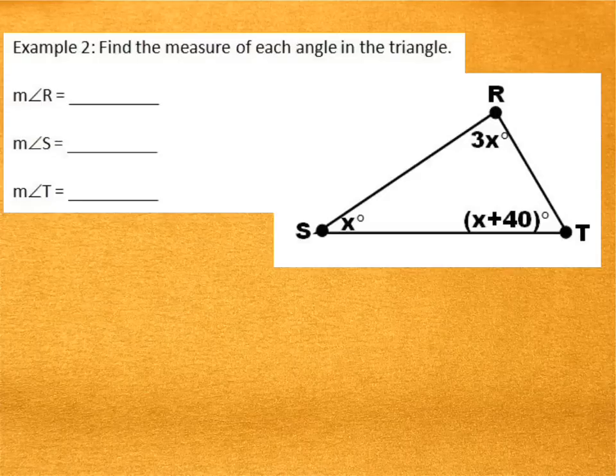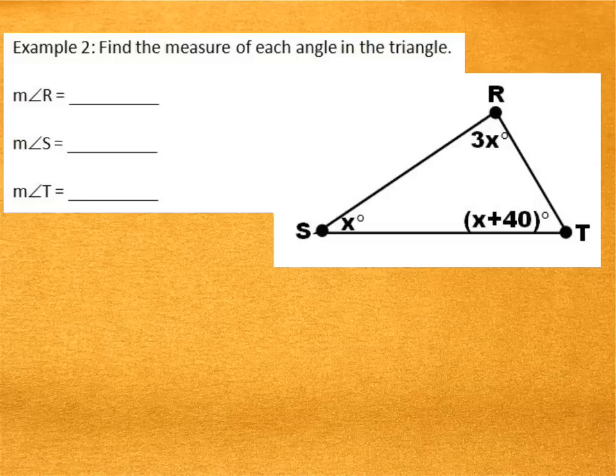Now what about this? We're given a triangle here, but the measures of the angles are expressions in terms of X. So we need some kind of equation so that we can solve for X, so we can figure out what the measure of each angle is. We know that all three of the angles add up to 180 degrees. So how can I write an equation that says that? Well, that would be 3X plus X plus X plus 40 has to make 180.